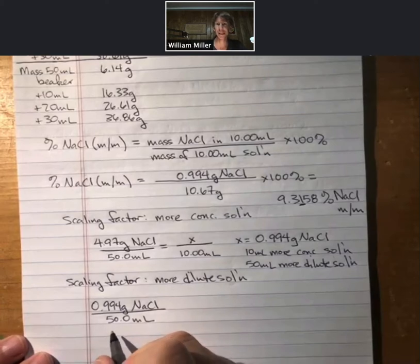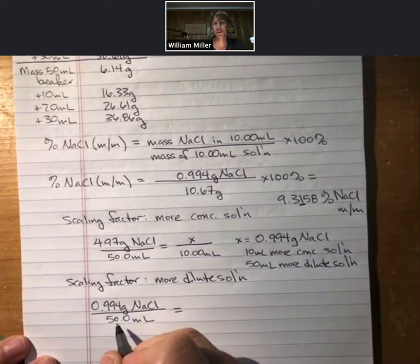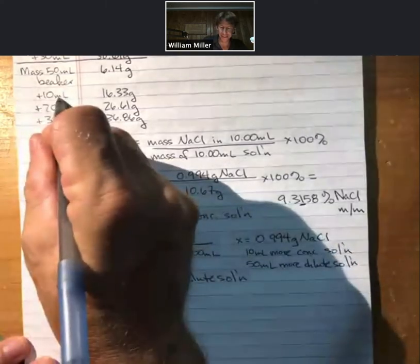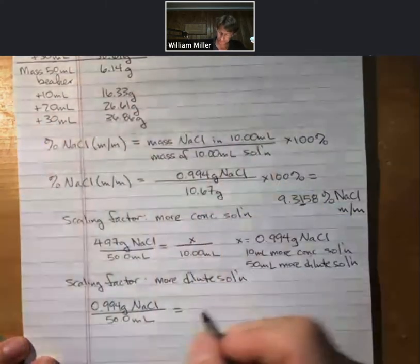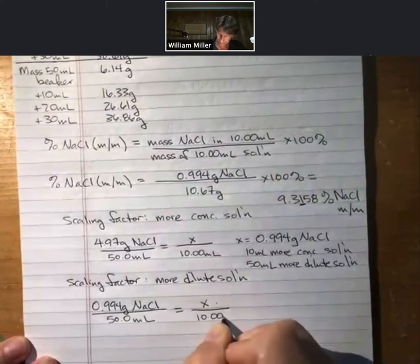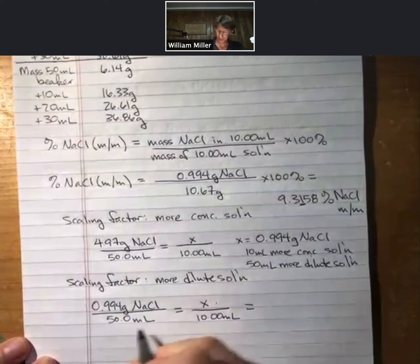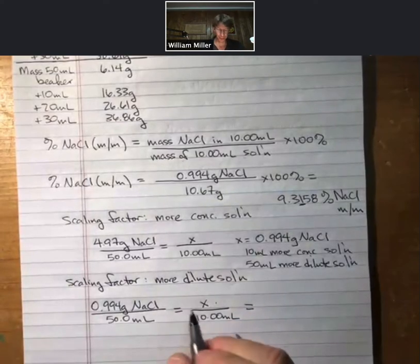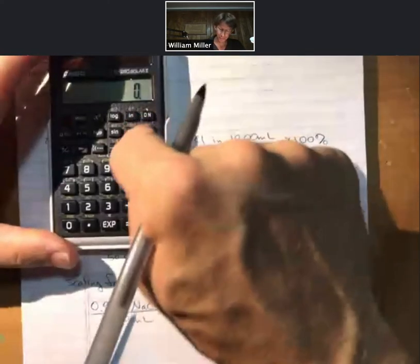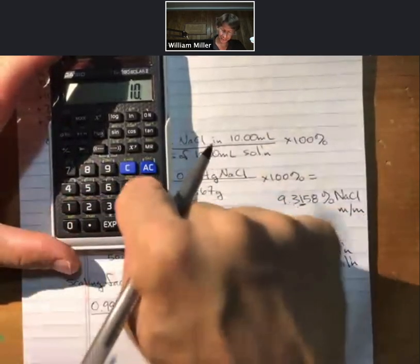I get a lot of questions about this, and I help a lot of students with it. But then, from there, out of our 50 milliliters of solution, we actually only took 10 milliliters of that each time. And so, we're taking approximately, or exactly, one-fifth of that, 0.994 times 10 divided by 50.